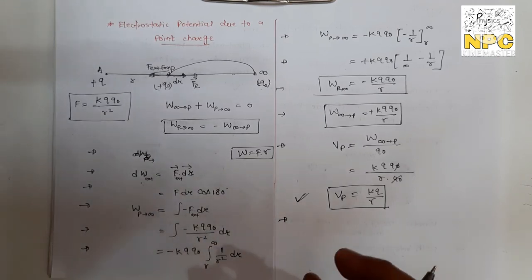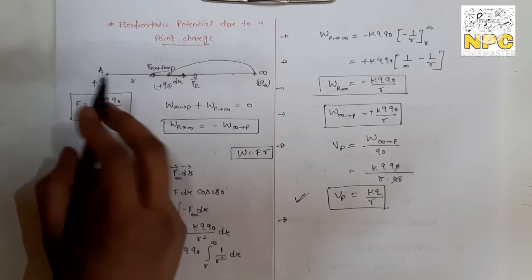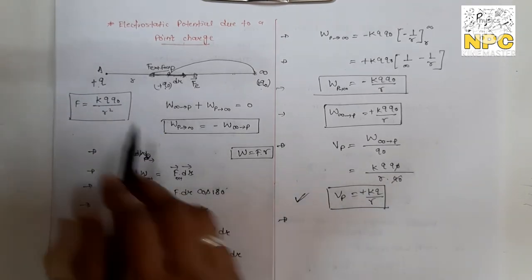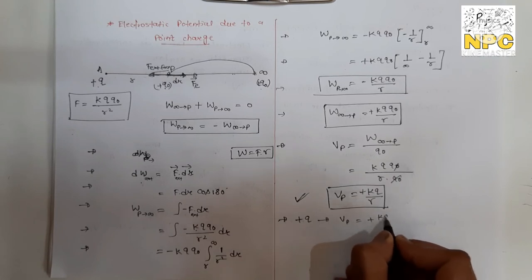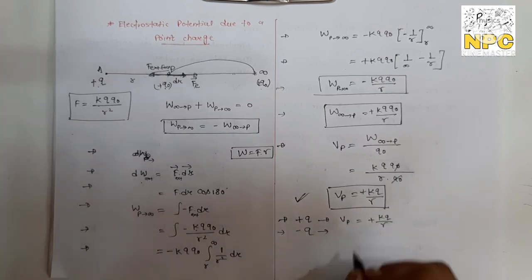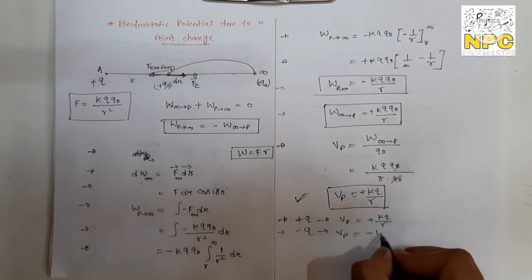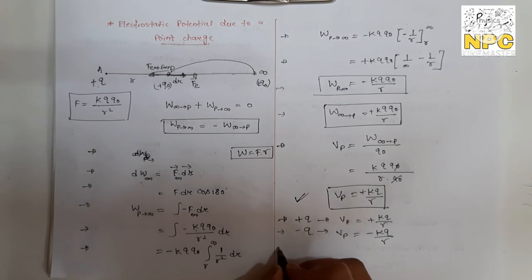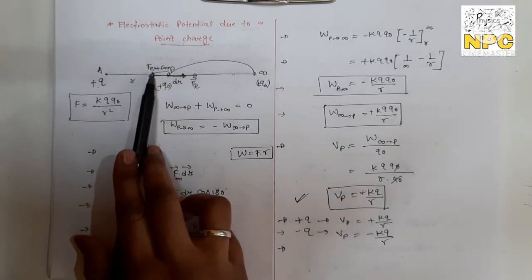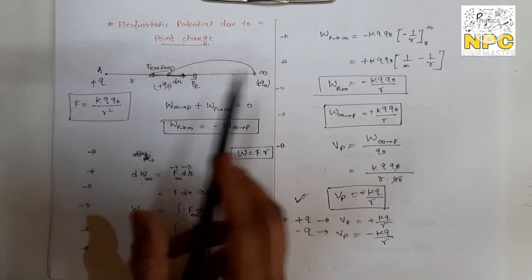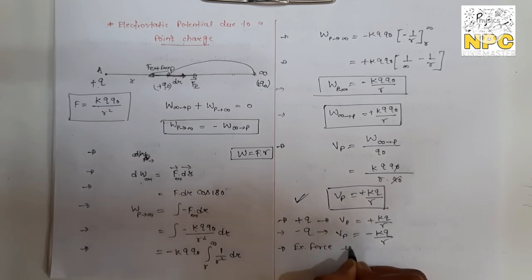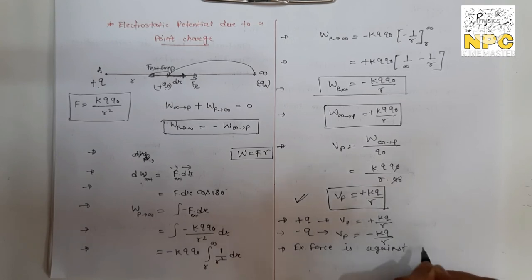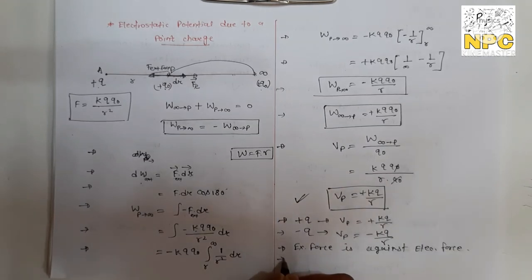This potential is a scalar quantity. For a positive charge, the equation gives positive potential: V = +kq/r. If a negative charge is taken instead, the potential becomes negative: V = −kq/r. Since it is a scalar quantity, direction does not matter here.